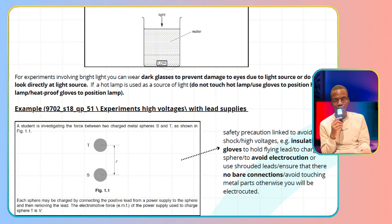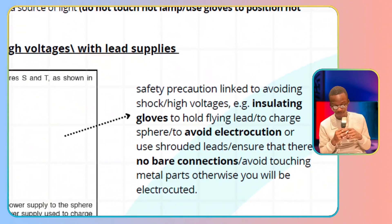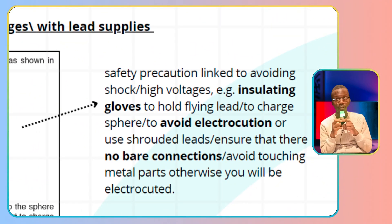You can have experiments with high voltages. An example is May/June 2018 question paper 5-1, or with lead supplies—high voltages with lead supplies. For example, a student investigates the force between two charged spheres. A safety precaution to avoid shock from high voltages: if you see questions with exposure to high voltages, highly recommend you write this down: